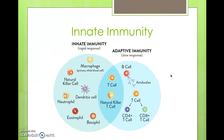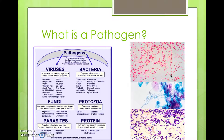The innate immune system forms the first and second lines of defense and is a system that is naturally present in your body. Here pictured on the left are many cells that are present within innate immunity. When we mention pathogens, we are referring to any virus, bacterium, or microorganism that is disease-causing. Toll-like receptors serve to recognize the patterns in these cells in order to form an immune response to rid the body of the imposing pathogen. Pictured on the right are various pathogens when stained and viewed microscopically.